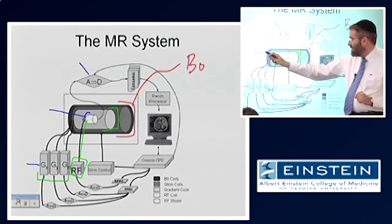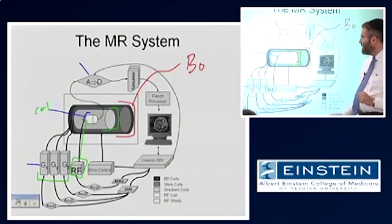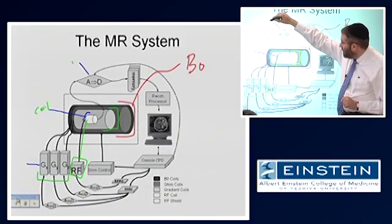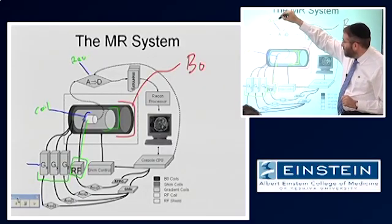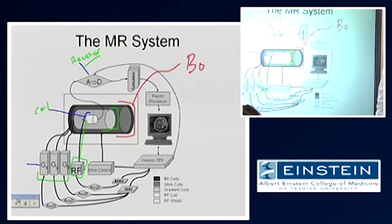There is the receiver coil, and then what we call the receiver, or analog to digital computer.